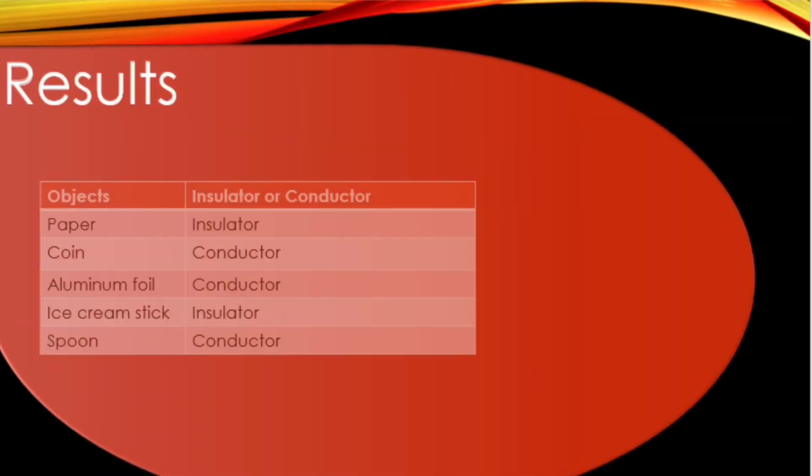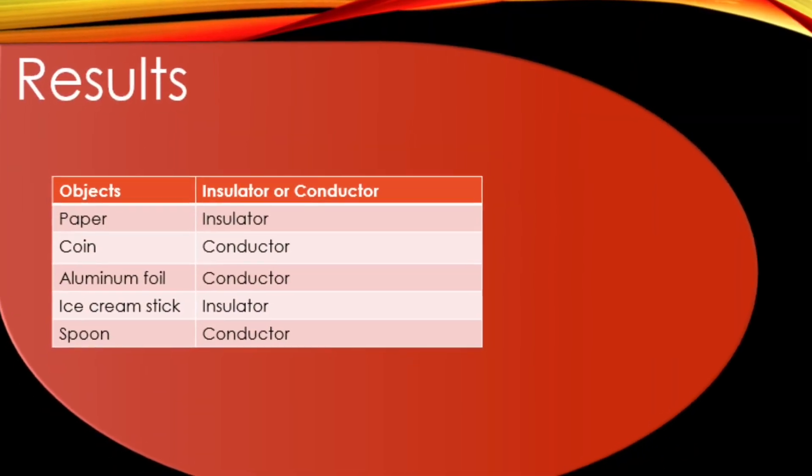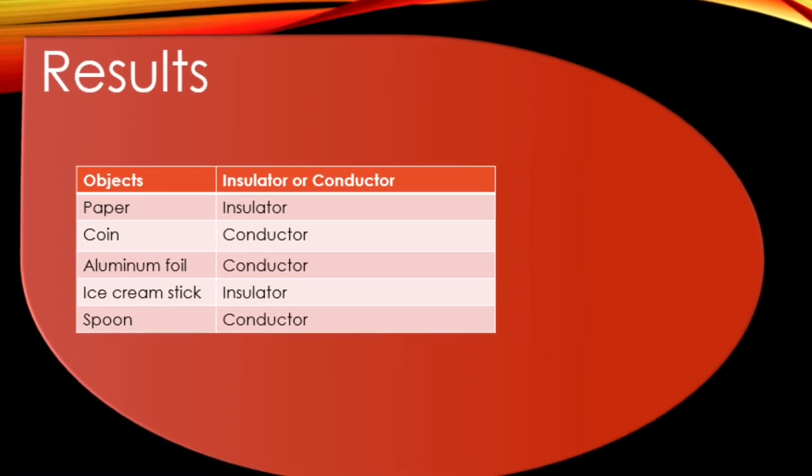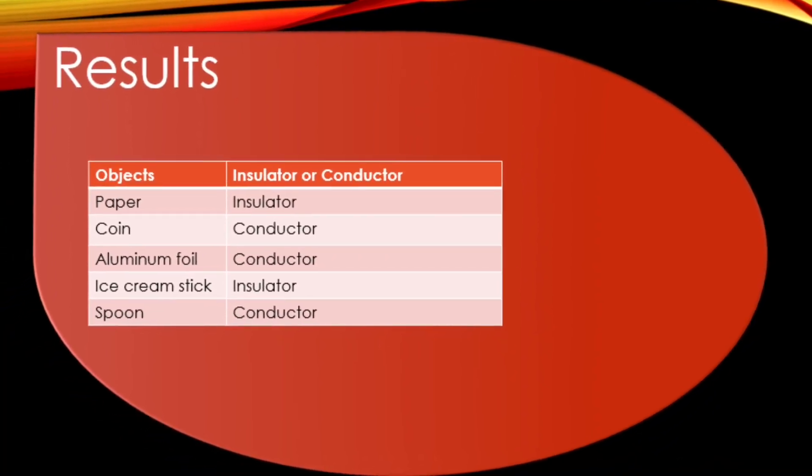The result of the project is: paper is an insulator, coin is a conductor, aluminum foil is also a conductor, the ice cream stick is an insulator, and a spoon is a conductor.